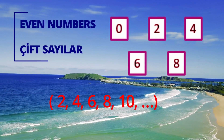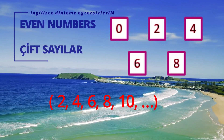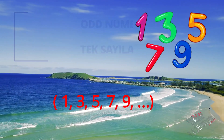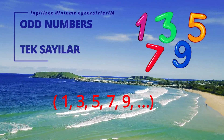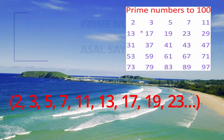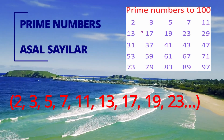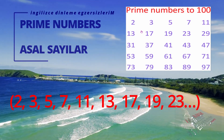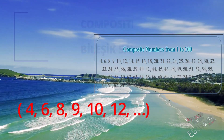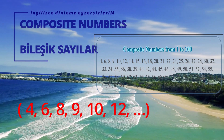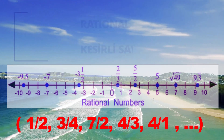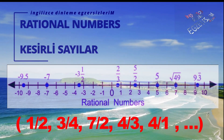Even numbers. Odd numbers. Prime numbers. Composite numbers. Rational numbers.